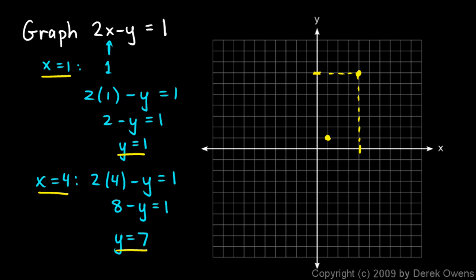Those two points are enough to graph the line, so I'll draw in a straight line through them. Every single point on that line has an x-coordinate and a y-coordinate that together satisfy that equation. So we say that this line is a graph of that equation.